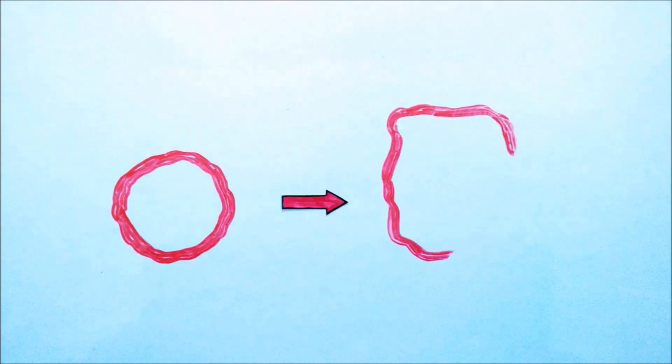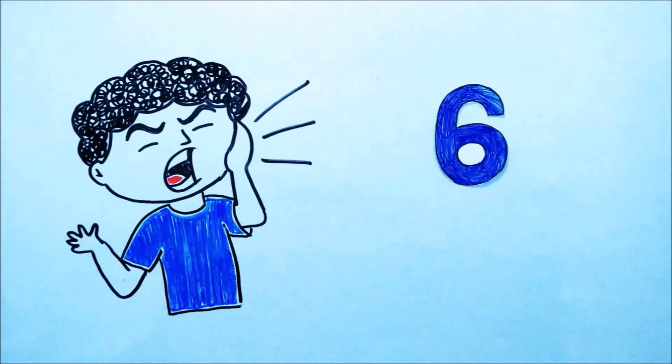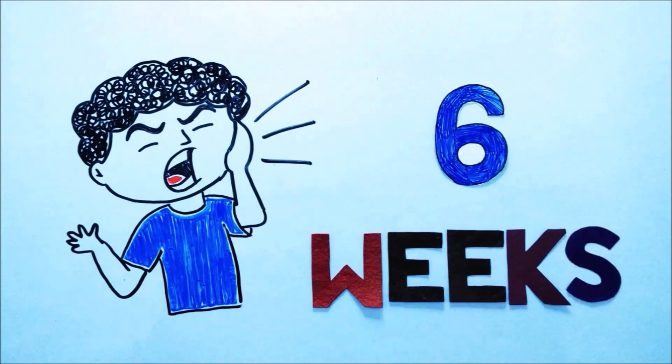Major canker sores are larger and deeper. They are usually round but they may have irregular edges when they are very large. They are extremely painful and might take 6 weeks to heal.